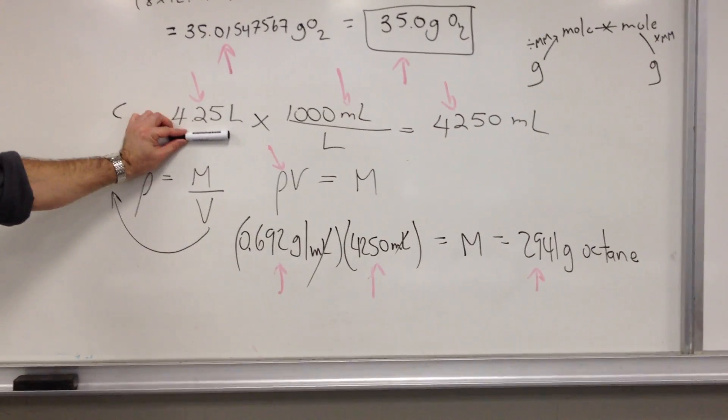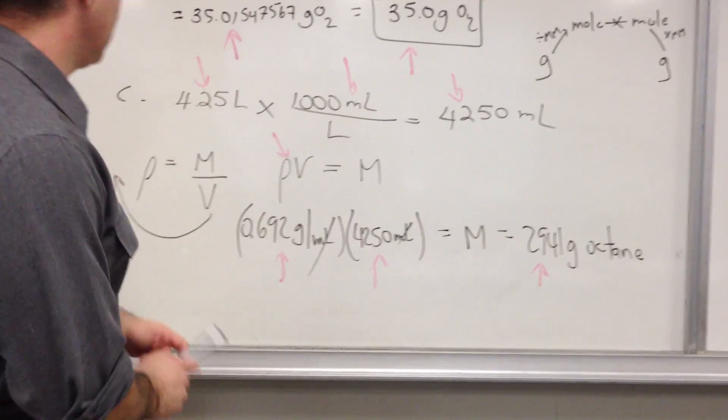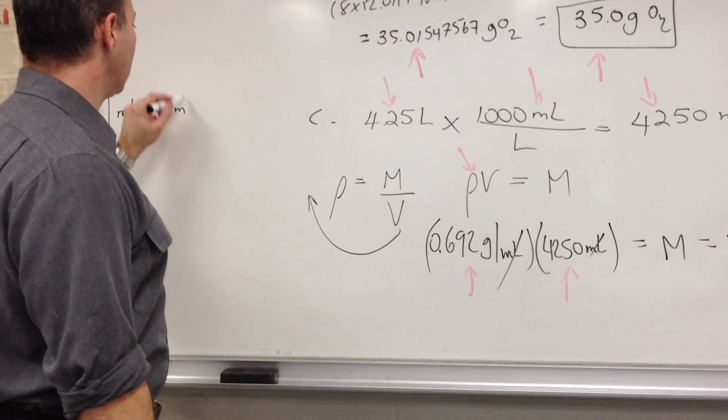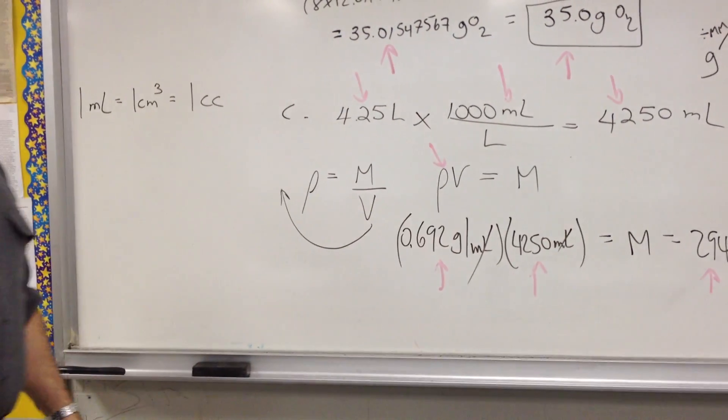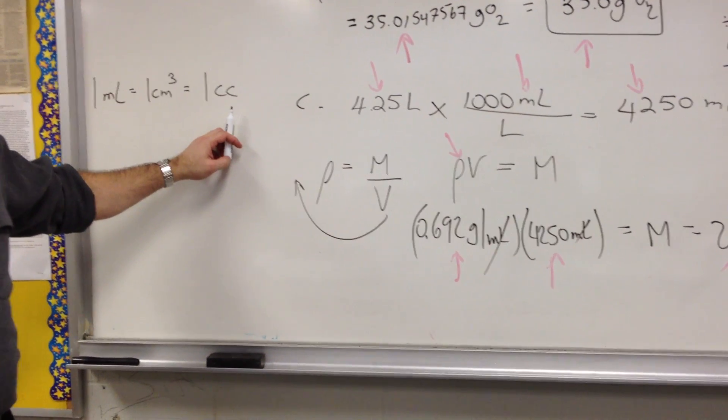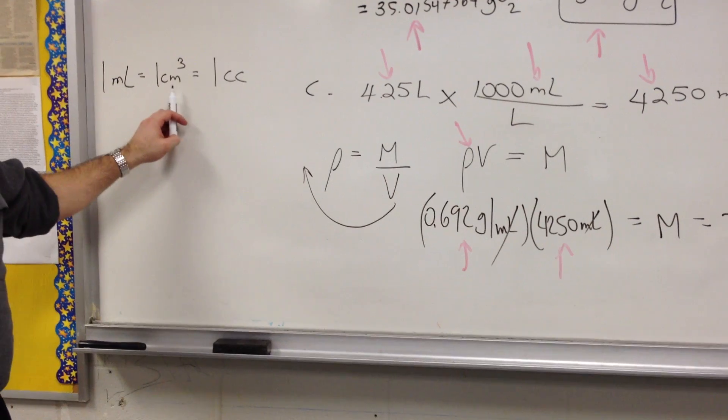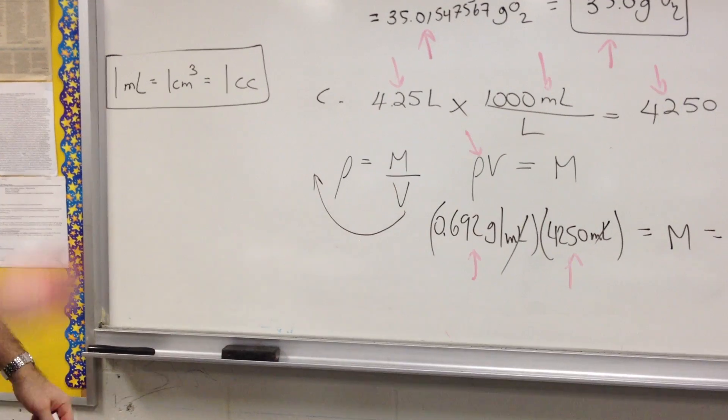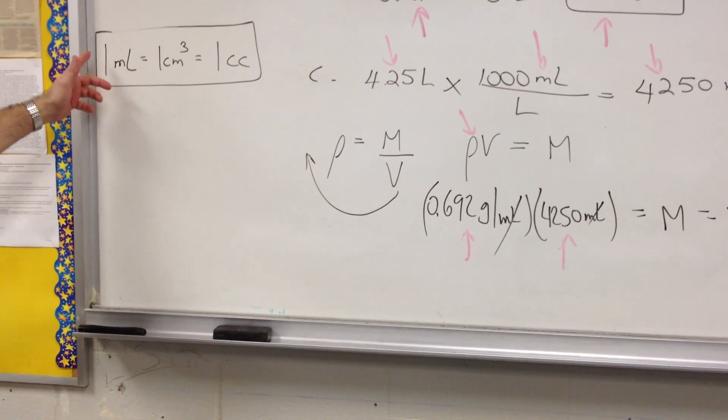We start off with 4.25 liters of octane. The conversion factor is 1,000 mL per liter. Incidentally, 1 mL is equal to 1 centimeter cubed. And it's also sometimes referred to as a cc. You'll see it written on syringes, typically. Cc. It's the same thing. 1 mL, 1 centimeter cubed, 1 cc is the same measure of volume.